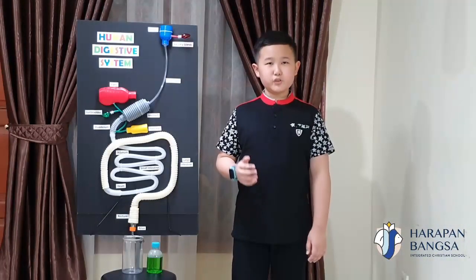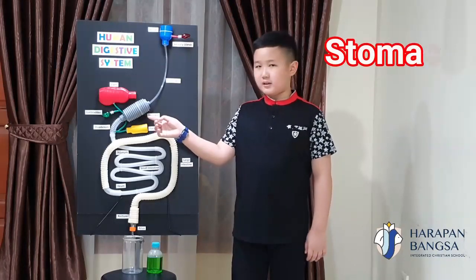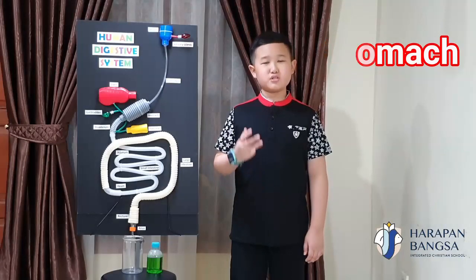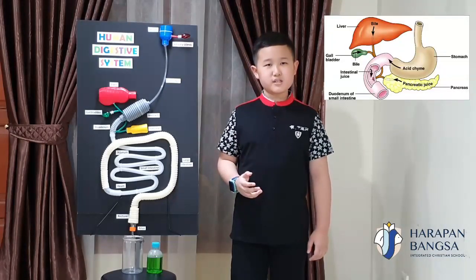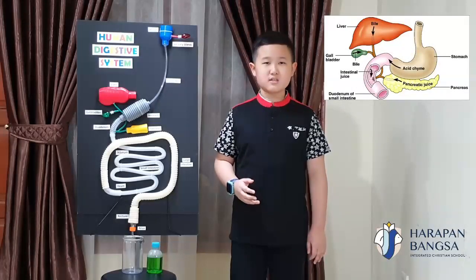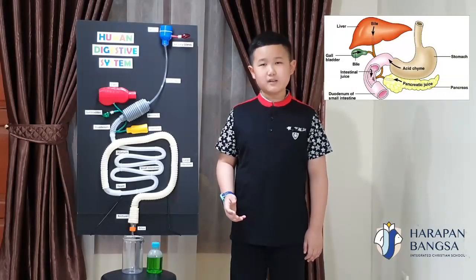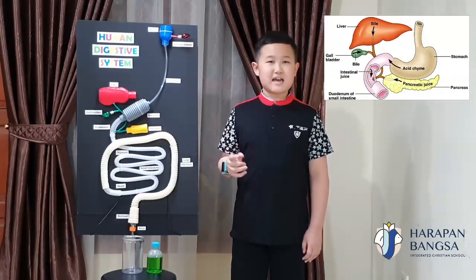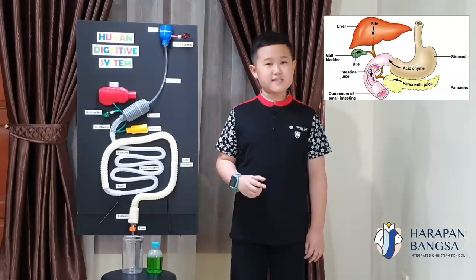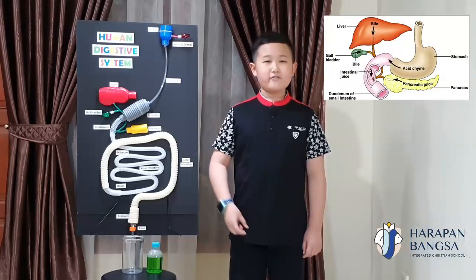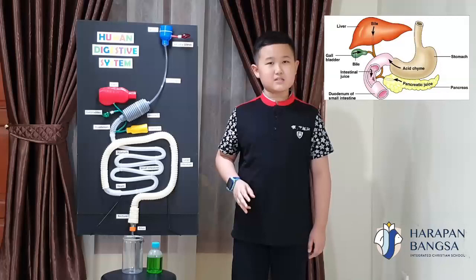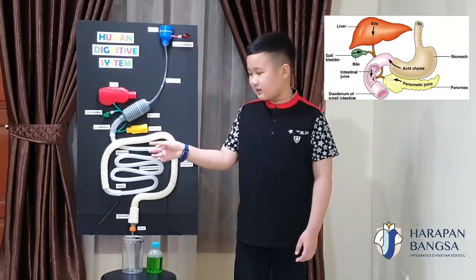Then the food will go to the stomach. The stomach is a place where the food gets pounded into chunks. Peristalsis in the stomach blends the food with gastric juices into a creamy liquid. The stomach releases acid and enzymes and starts to dissolve the food and break down its proteins. After three hours in the stomach, the creamy liquid is ready to move to the small intestine.